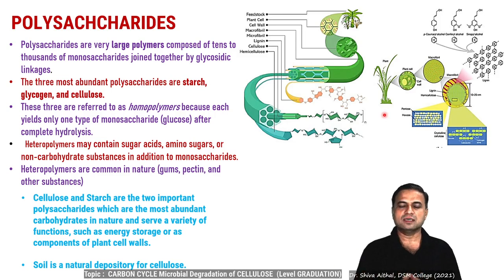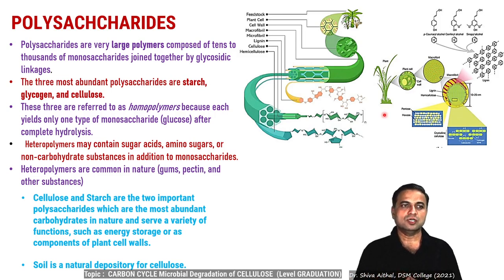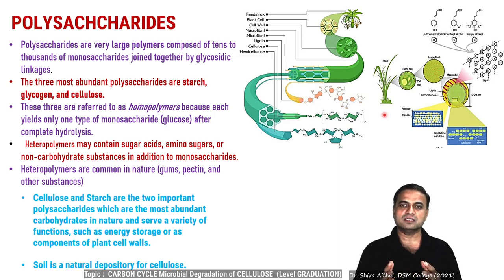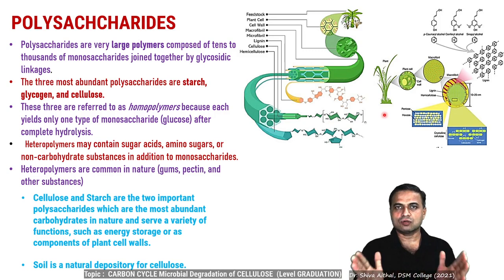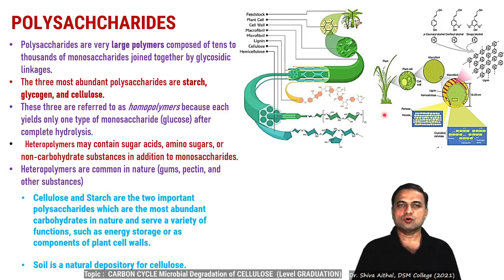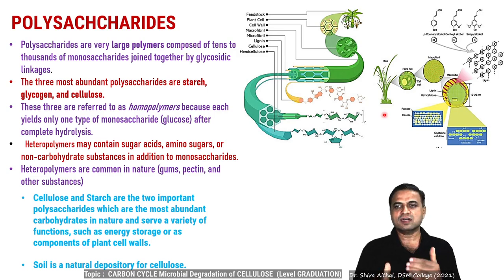Starch and cellulose are found in plants, and glycogen in animal tissues. These three are the systems that trap carbon. They are referred to as homopolymers because each one yields one type of monosaccharide — glucose — after complete hydrolysis. As you can see in the figure, plant material is made up of cellulose, lignin, and hemicellulose; when completely degraded, molecules of glucose are formed.